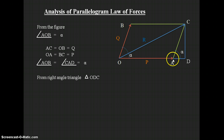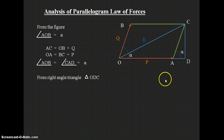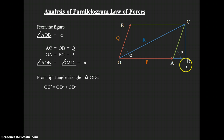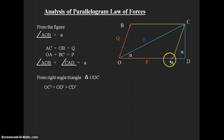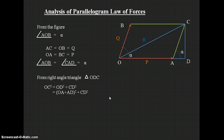From right-angle triangle ODC, by the Pythagorean theorem we can write: OC² = OD² + CD². Now, OD can be written as OA + AD, so OC² = (OA + AD)² + CD².